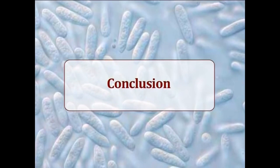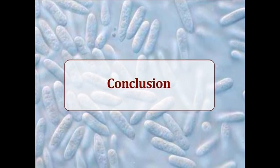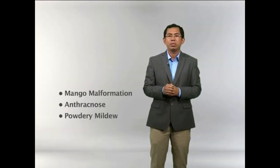In conclusion, mango is an important fruit crop with the highest area of cultivation in India. Increasing productivity is important, as it is greatly damaged by biotic and abiotic factors. Important diseases include mango malformation, anthracnose, and powdery mildew. Management of these diseases is possible with proper diagnosis and identification of the pathogens involved.